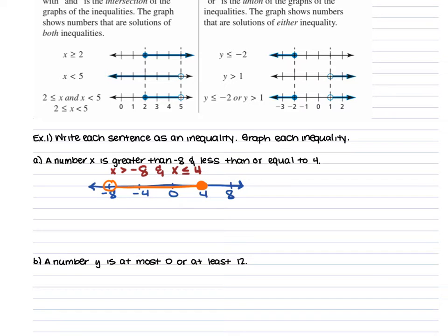A closed circle on 4, and the line will go in between the two. With an AND statement, all of the numbers that those inequalities include have to be represented — and only those numbers. So the numbers greater than negative 8 are only those from negative 8 to positive 4, because you also have x less than or equal to positive 4.